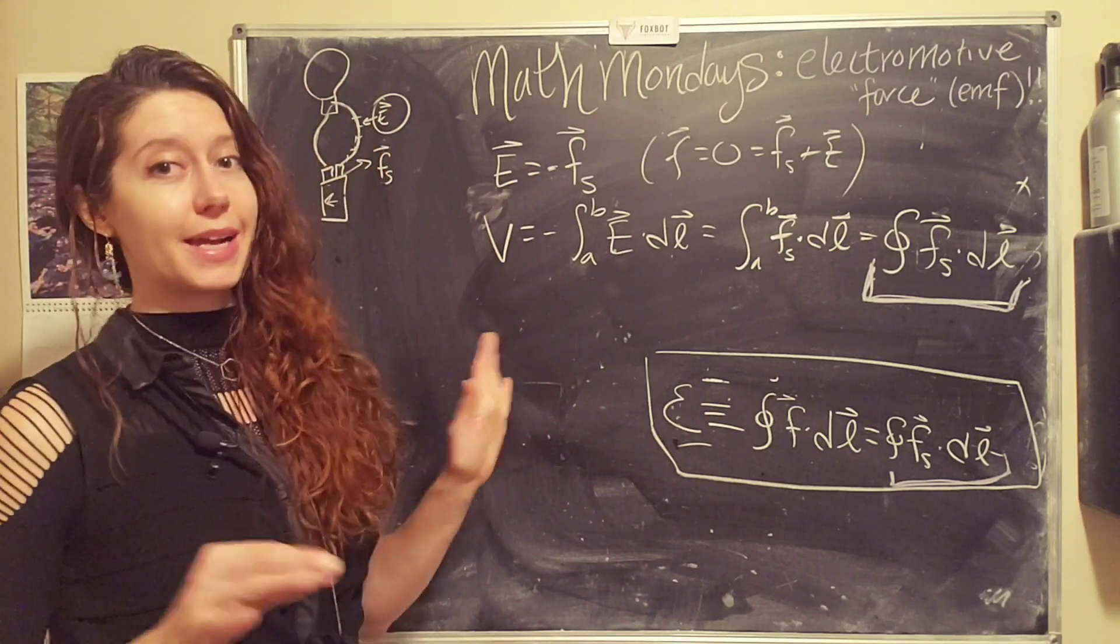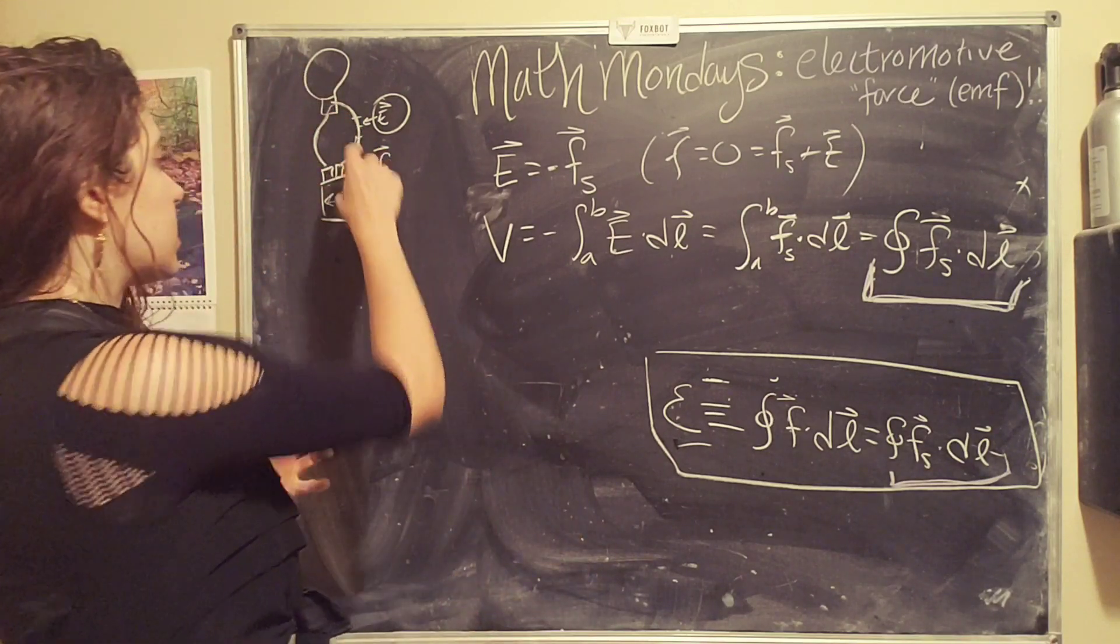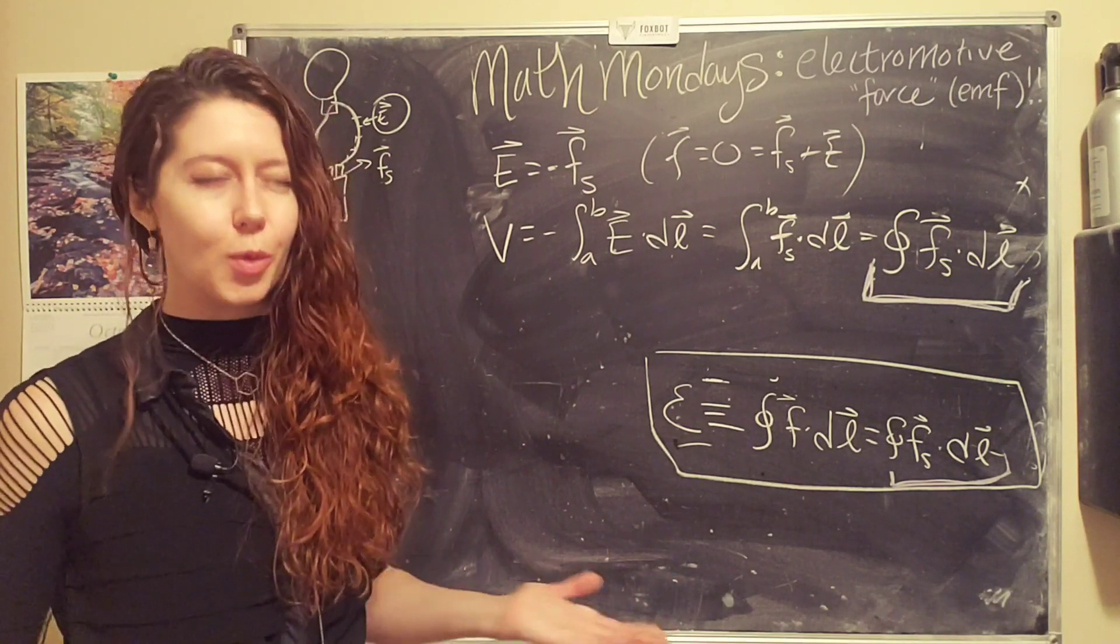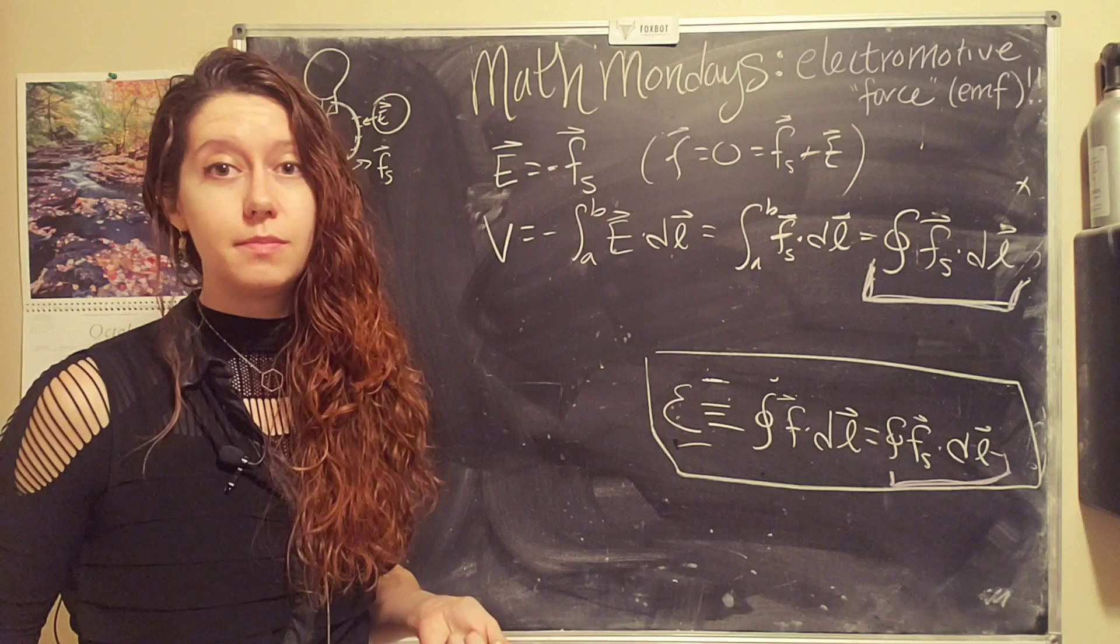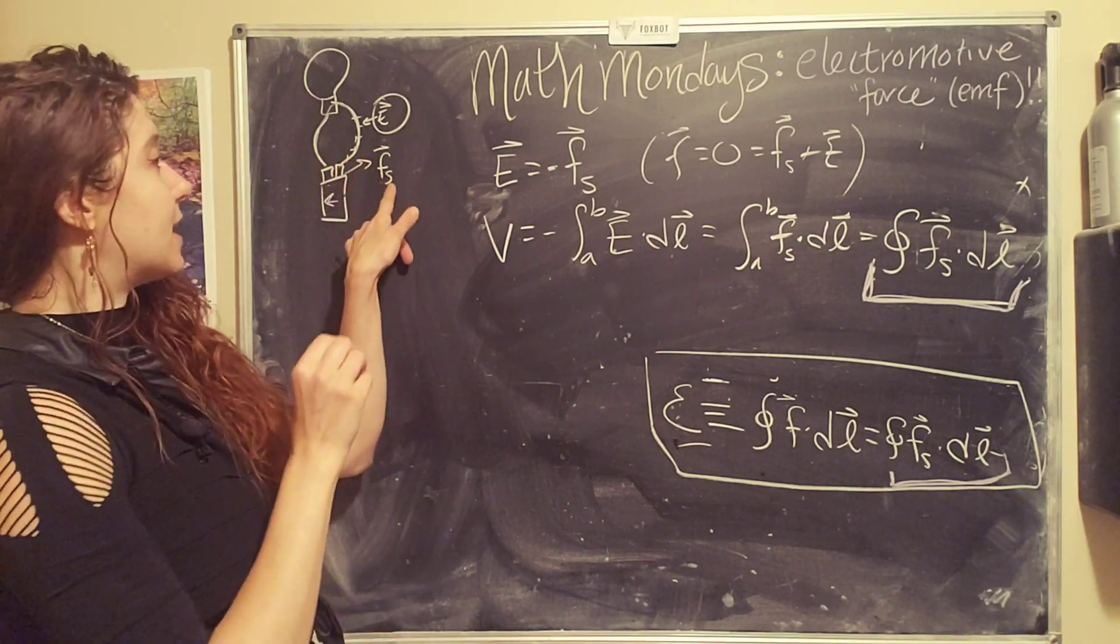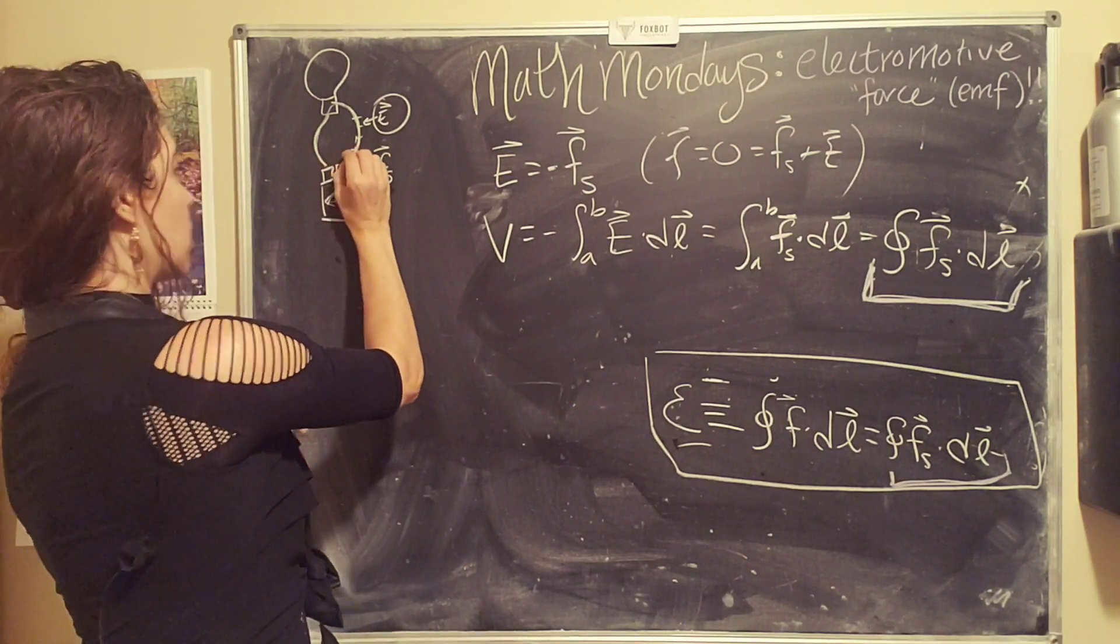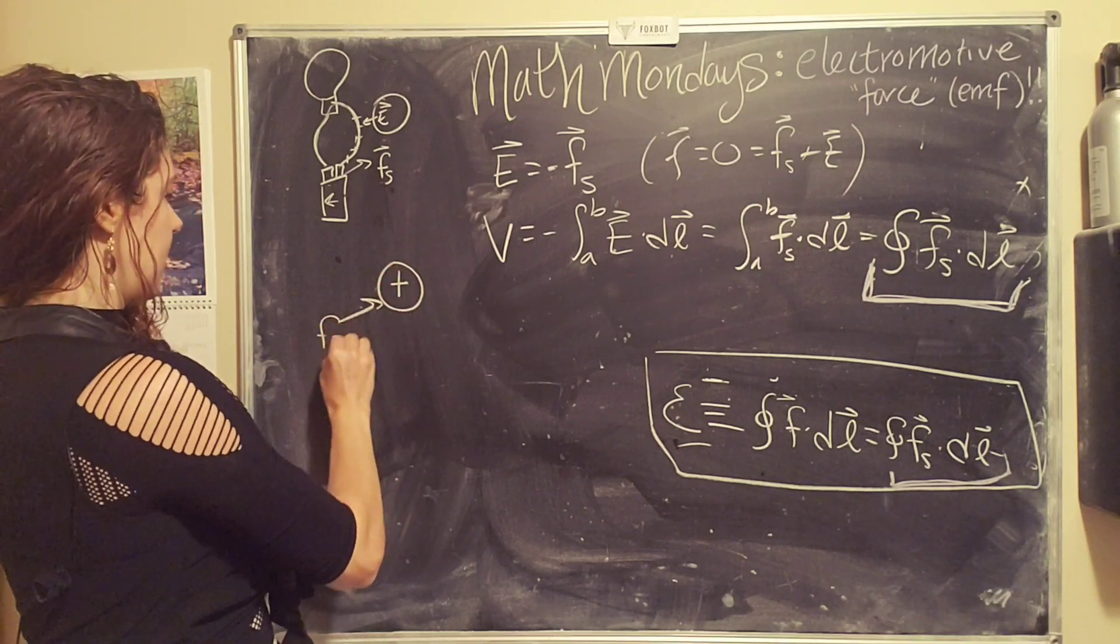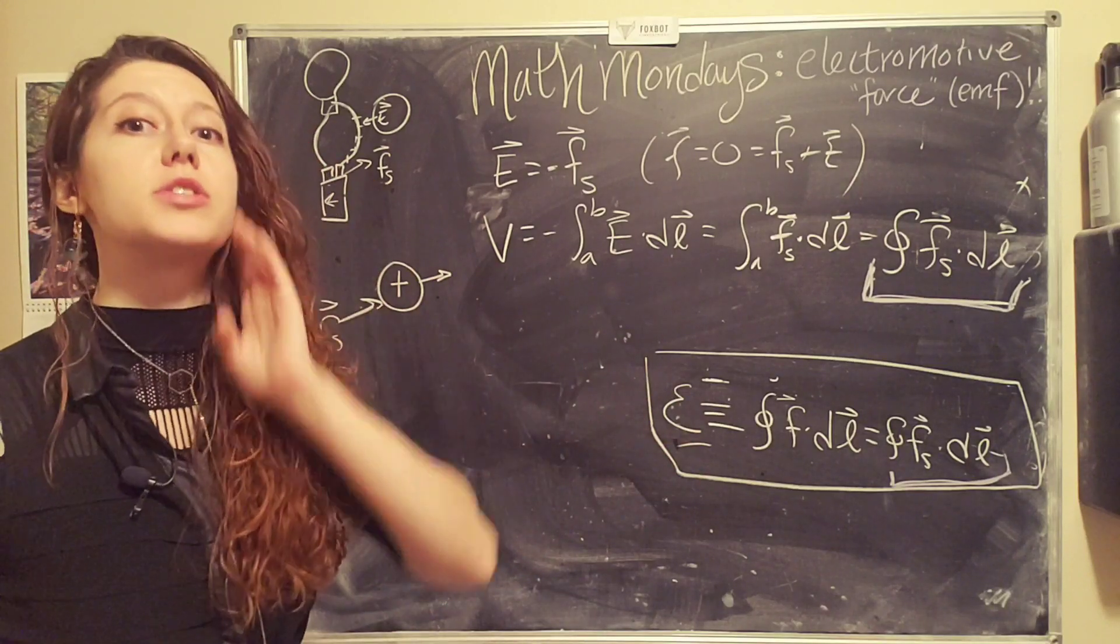This tells us that before we connect up our circuit, or before we turn it on, we have these charges that have an electrostatic force, and they're hanging out in equilibrium, more or less. When we turn on our battery, the battery exerts the source force on the first charge.